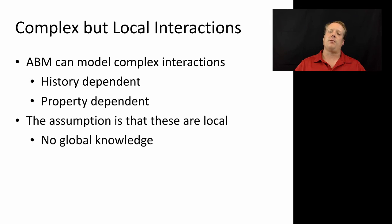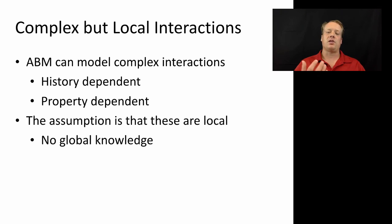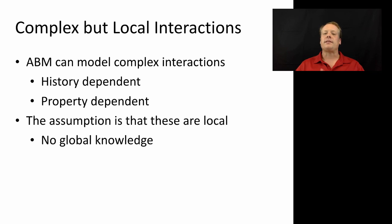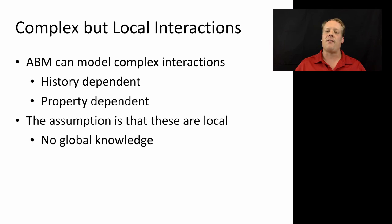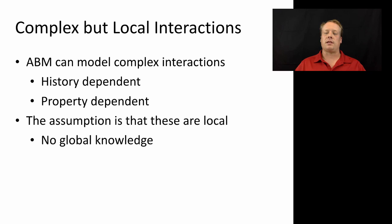Another example is property-dependence — an agent might react differently to someone in a different category or agent class. In an agent-based model I'm building recently, we look at the job hiring process, where an agent might react differently to a skilled versus a non-skilled job seeker when deciding how to hire them. The assumption in almost all agent-based modeling is that all these interactions are local — you only have access to information through local interactions, and there is no global agent telling agents what to do in all cases. Information does not transmit outside of some sort of local interaction structure.